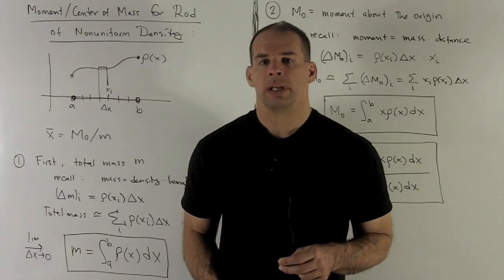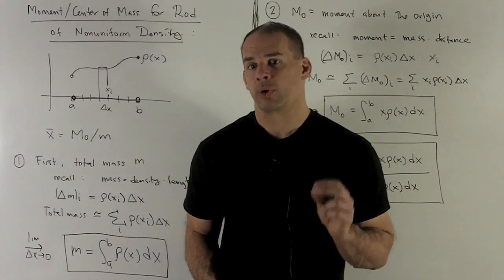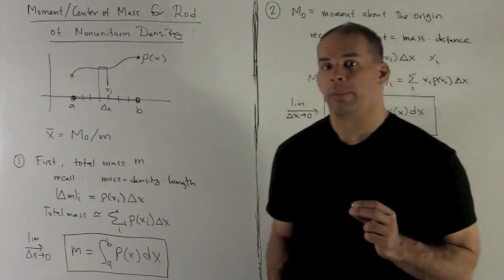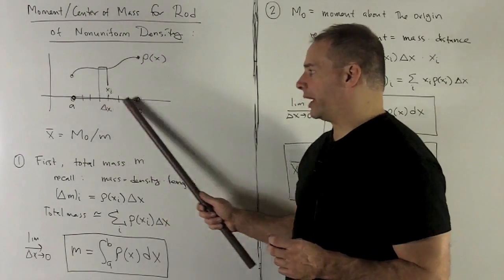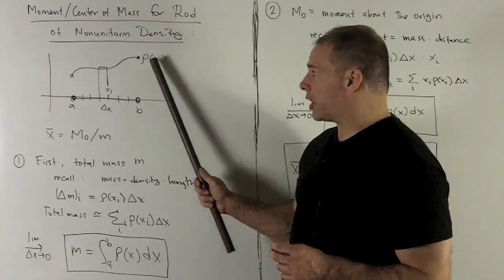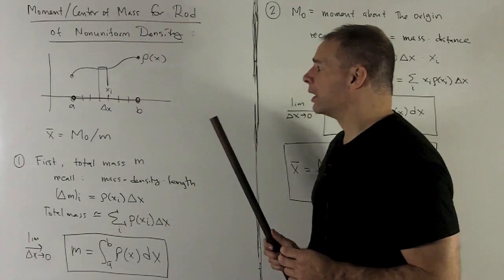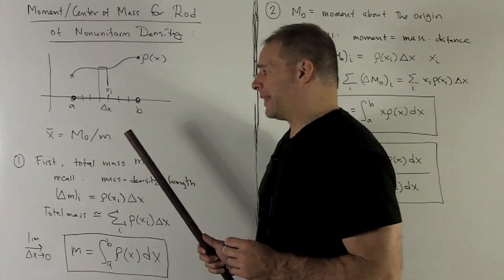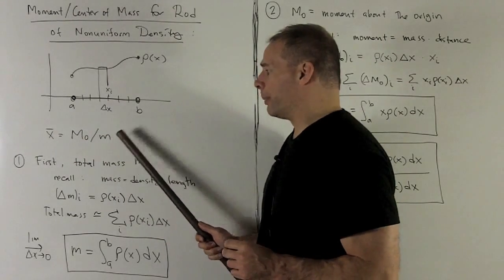Let's consider moments and center of mass for a rod of non-uniform density. Our situation is going to be a rod situated from A to B along the x-axis. We're going to have a density function on the rod which depends on the point x. What I want to find is the center of mass. To find that, I'm going to need to figure out the moment about the origin and the total mass of the rod.